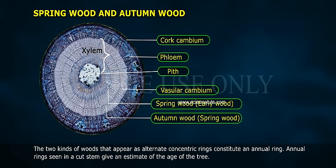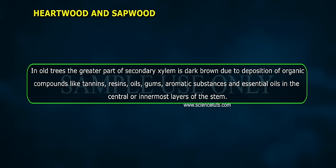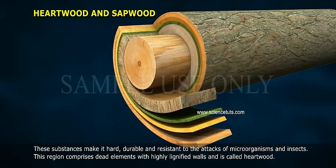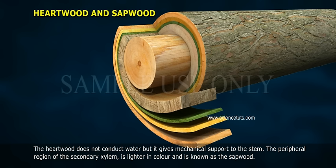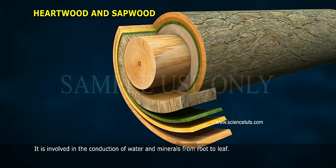Annual rings seen in a cut stem give an estimate of the age of the tree. Heartwood and Sapwood. In old trees, the greater part of secondary xylem is dark brown due to deposition of organic compounds like tannins, resins, oils, gums, aromatic substances and essential oils in the central or innermost layers of the stem. These substances make it hard, durable and resistant to attacks by microorganisms and insects. This region comprises dead elements with highly lignified walls and is called heartwood. The heartwood does not conduct water, but it gives mechanical support to the stem. The peripheral region of the secondary xylem is lighter in colour and is known as sapwood. It is involved in the conduction of water and minerals from root to leaf.